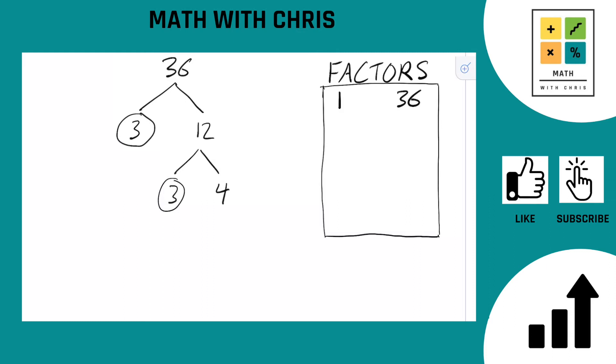4, however, is not. 4 can be broken down even further. 4 is of course 2 times 2, and 2's are prime numbers, so we can circle those guys right there.